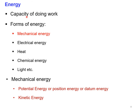Coming to energy: we define energy as the capacity of a body to do some work. We have different forms of energy such as mechanical energy, electrical energy, heat energy, chemical energy, light energy, etc. We are going to focus on mechanical energy, which has two forms: potential energy — also called position energy or datum energy — and kinetic energy.